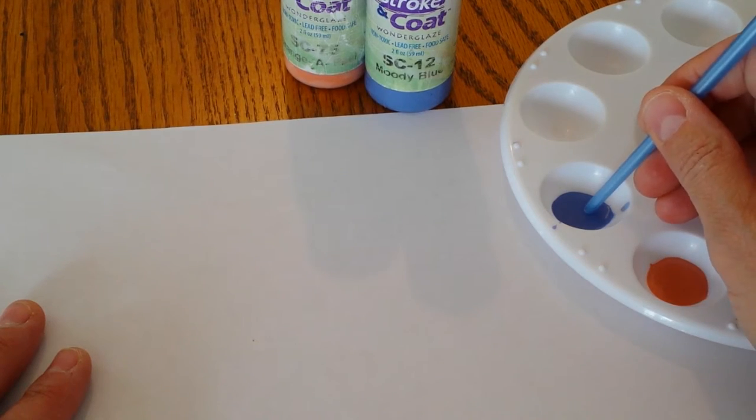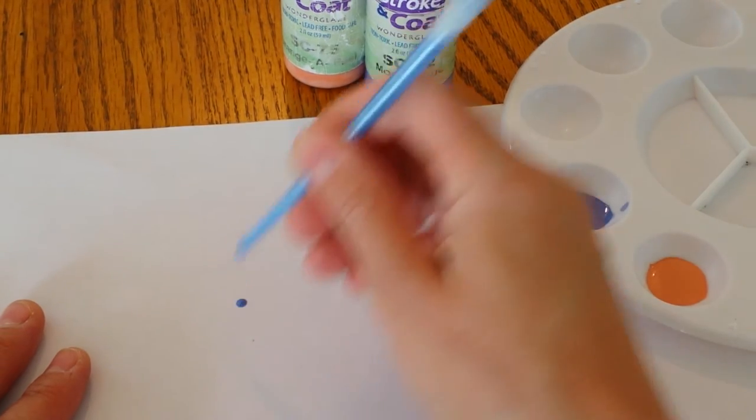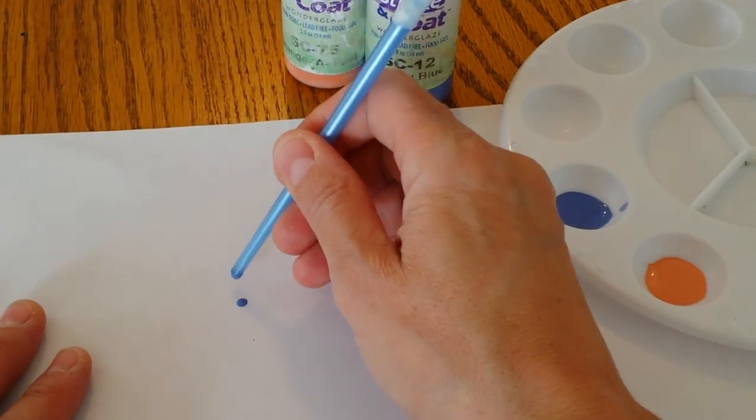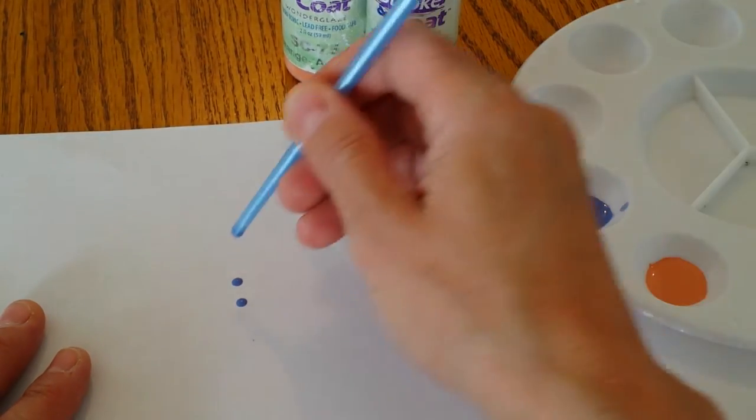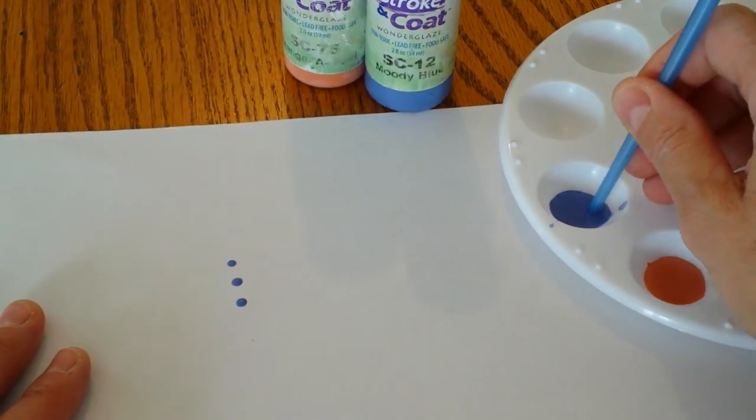So to start with, a very simple way to do spots is just like so. Dipping the end of your paintbrush in the paint and then placing it onto your item.